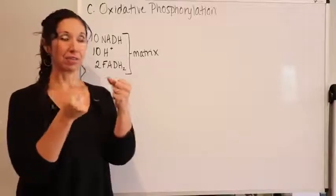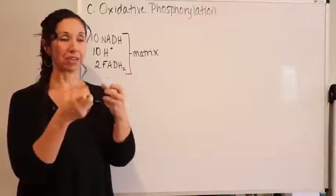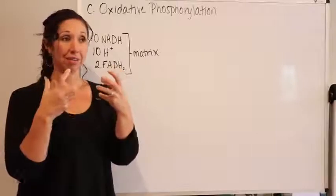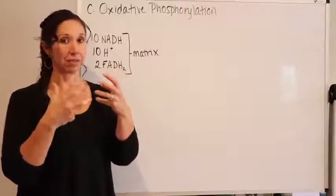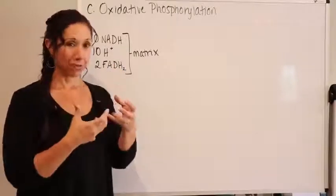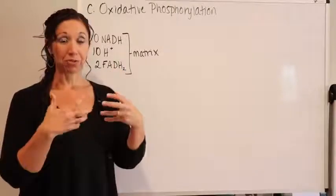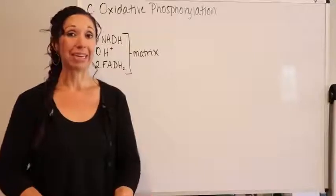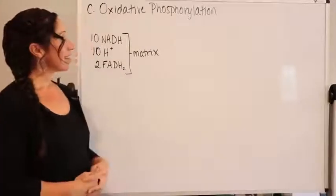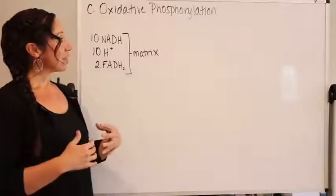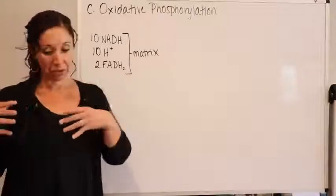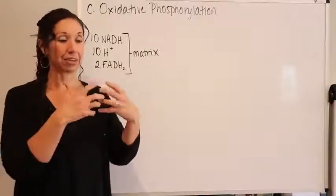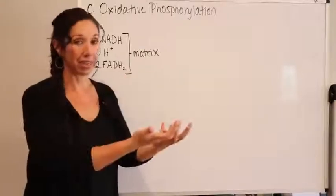Just the words oxidative and phosphorylation — when it's oxidative, there are electrons involved. Phosphorylation means we're phosphorylating, so we're making ATP at this point. And if you think of all the different phases, we had glycolysis, the citric acid cycle, and now we're finally here.